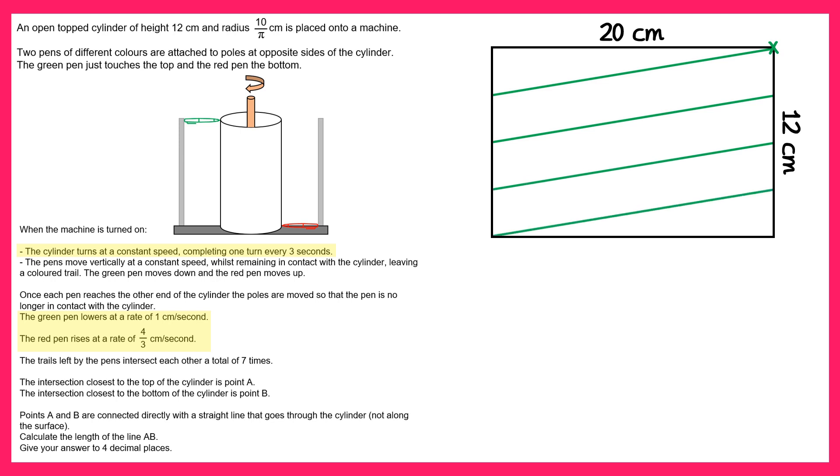Now if we think about the red pen, this one's going to rise up from the bottom but it will go four thirds of a centimeter per second. This will mean it will take nine seconds to go from the bottom to the top which means the cylinder will have rotated three times.